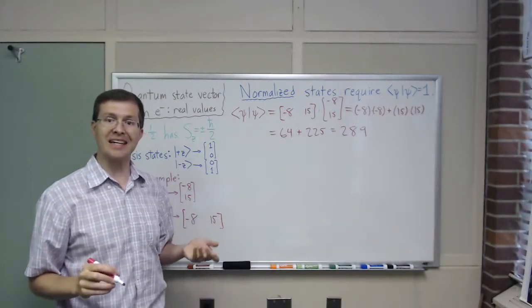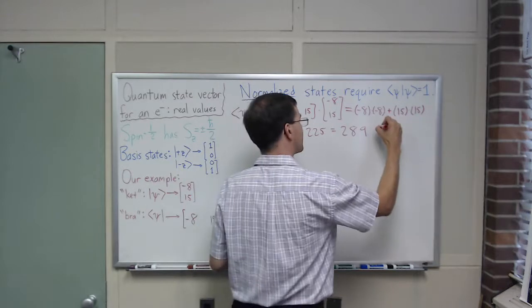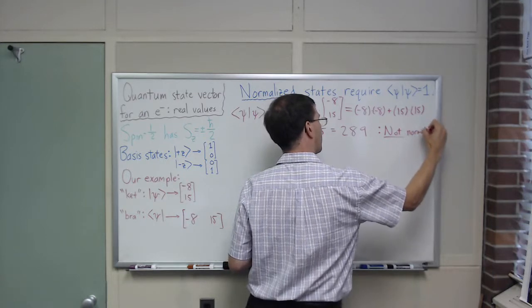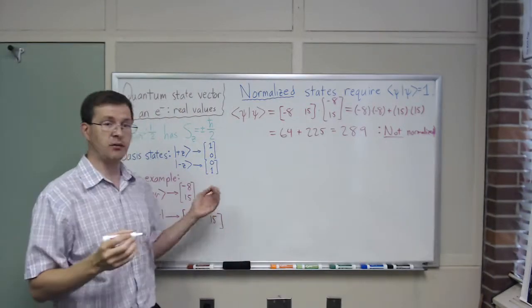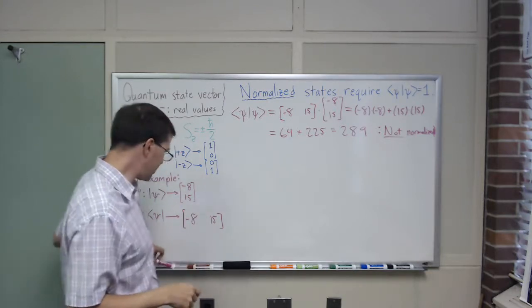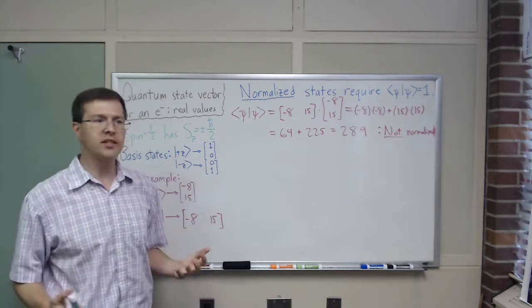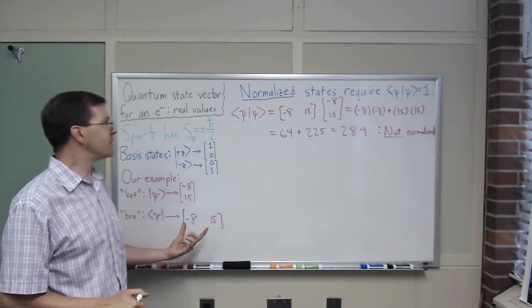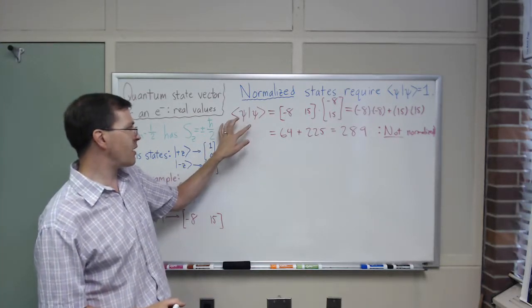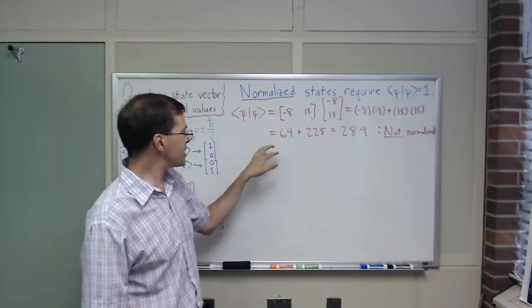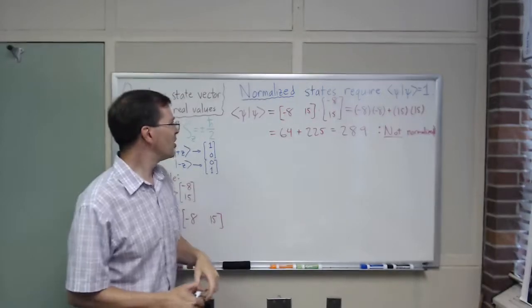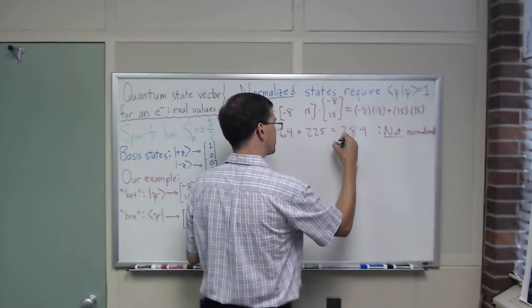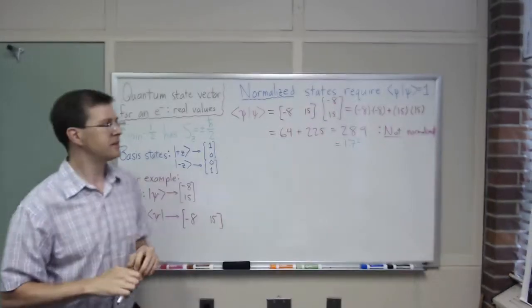You may have noticed that 289 is not equal to 1. So that means this is not a normalized state. We don't want to do calculations with the state. We want to find the normalized version of the state. What we really want to do is we want something that has the same content as this, the same meaning, but that when we do ψ bra with ψ ket, when we have that inner product, we want it to be something we're going to find 1 here instead. 289, I happen to know, is equal to 17 squared. That's handy.